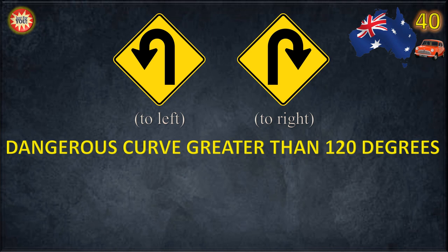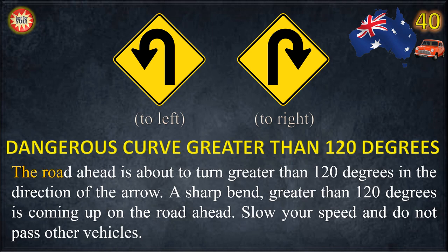Dangerous curve greater than 120 degrees. The road ahead is about to turn greater than 120 degrees in the direction of the arrow. A sharp bend greater than 120 degrees is coming up on the road ahead. Slow your speed and do not pass other vehicles.